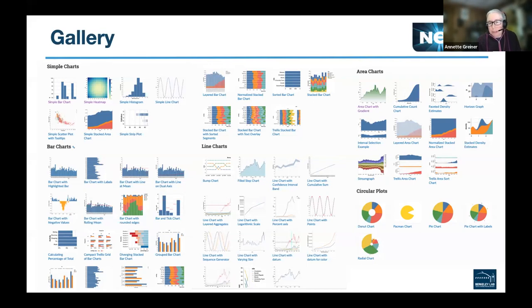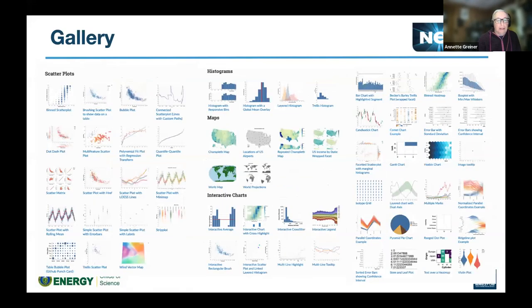There's a whole lot of other different ways in which people have found that they can do stuff in Altair. Same for line charts and area charts and pie charts and donut charts are all in there. Scatter plots, lots of different ways of doing that as well. And we have histograms and maps, some examples of interactivity in there.